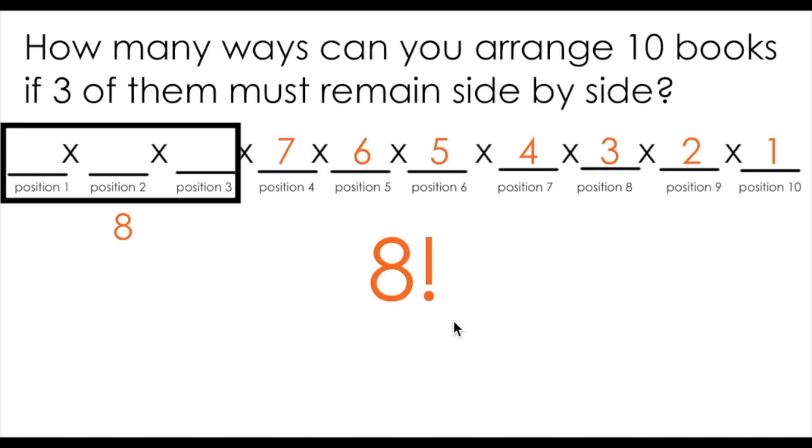So you might think, great, so it's just as simple as saying there are eight factorial possible ways of arranging these 10 books. However, if you said that, you'd be wrong.